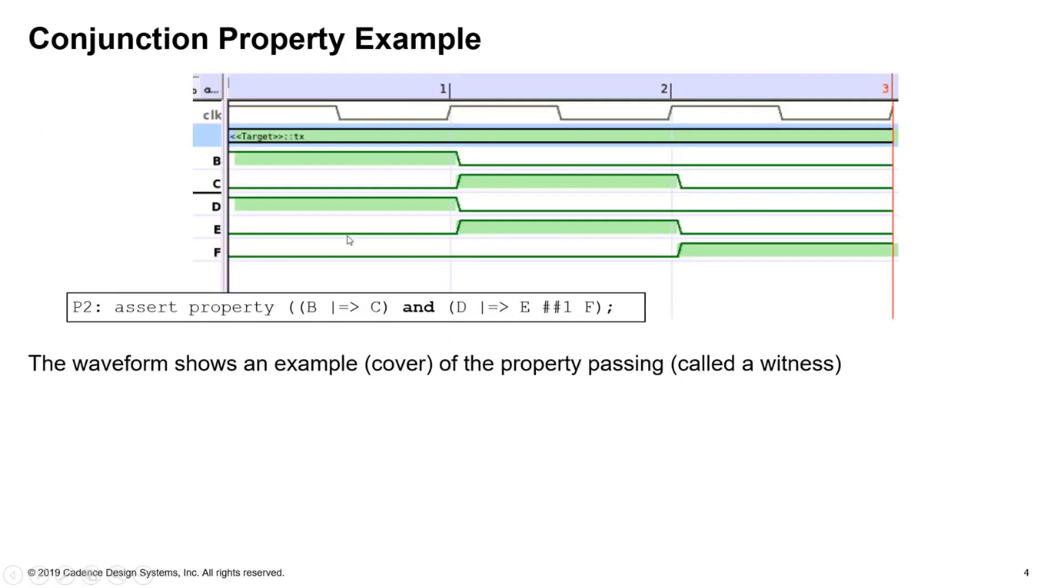So here's an example of that property passing. Each of these signals here where it's shaded green means it must be true in that cycle. Okay, so if anything on the right hand side of the implication was not high where it's shaded green, that would mean a failure of that assertion.